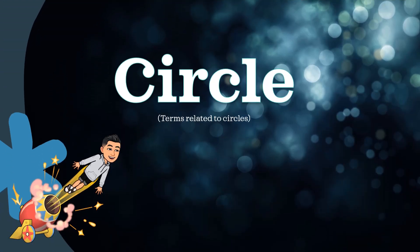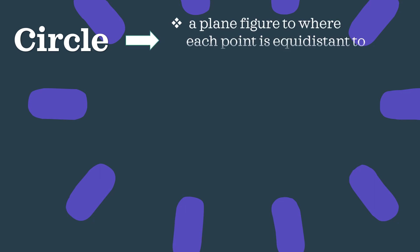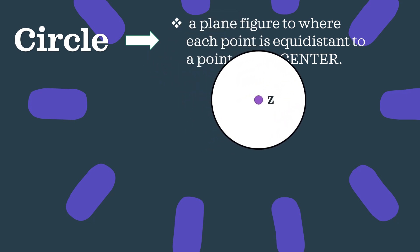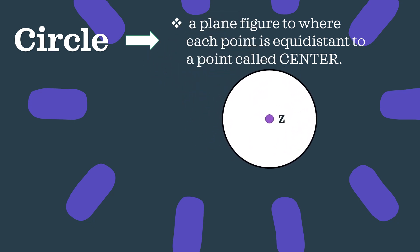Today we will be talking about circles, specifically terms related to circles. But first, what is a circle? We basically define a circle as a plane figure where each point is equidistant to a point called the center. Seeing that violet dot, that's what we call the center. So every point present in the circle is equidistant to this point.